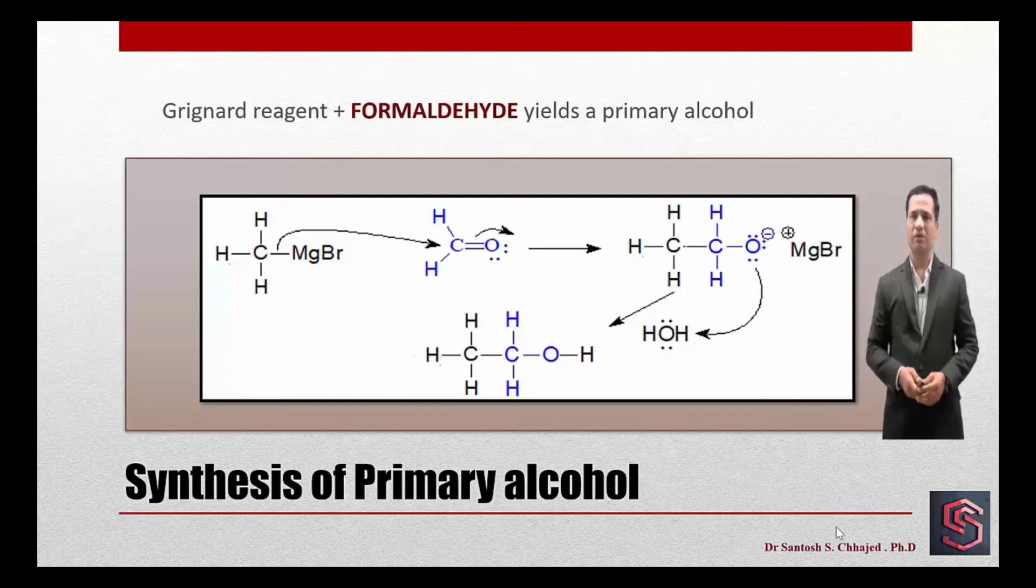As a consequence of that, pi electron will become migrated onto the oxygen. Later on, an ionic bond will form between oxygen and magnesium. We already discussed it is prone for hydrolysis. It will become broken down easily when allowed to react with water, so that corresponding alcohol will form.